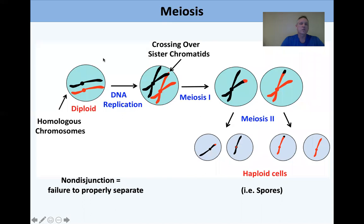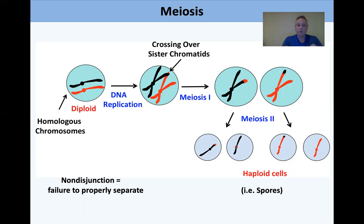Meiosis occurs in our germ cells — sperm and testes. Here you see a diploid chromosome. For simplicity, rather than showing all 22 plus X and Y in humans, we see two homologous chromosomes. Homologous chromosomes are not identical but rather similar — they're homologous.